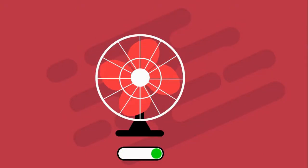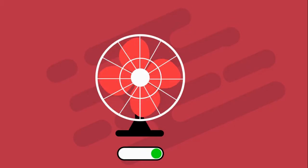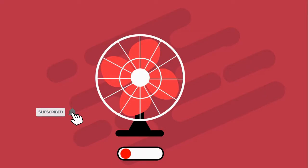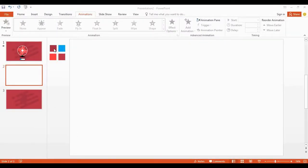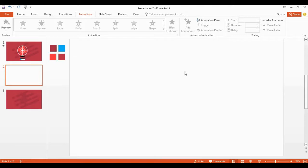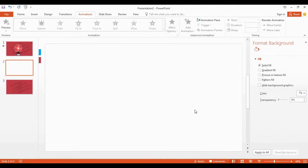Hey everyone, today we are going to create this beautiful animated table fan on just Microsoft PowerPoint. If you are new to this channel, please consider subscribing. So I already have the blank page here. Today we are going to use these colors. Let's start — right click, go to format background to choose the background color.